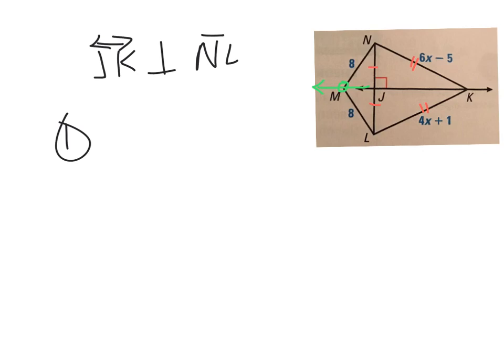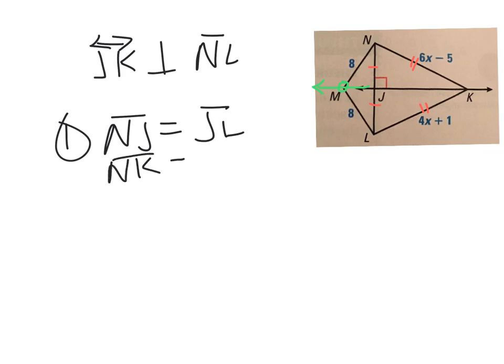Number one asks: what segment lengths are equal? Starting with the ones in the middle: NJ equals JL. NK equals LK. And by the converse of the perpendicular bisector theorem, Theorem 5.3, NM is congruent to LM.